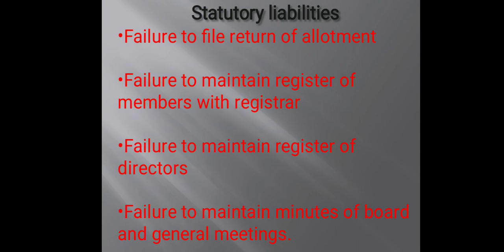The first point is failure to file return of allotment. Return of allotment is a statement submitted to the registrar containing the names and addresses of shareholders and how many shares they are going to hold. This should be signed by the director or the secretary and filed with the registrar within 30 days of allotment. If he fails to file it, the fine will be up to 5000 rupees every day.